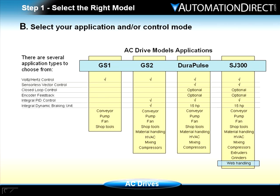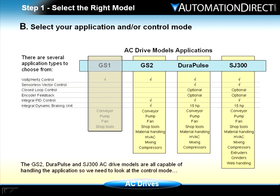Although the GS1 supports our application type, it does not meet our voltage requirements of 460 volts AC. Since the GS2, DuraPulse, and SJ300 AC drive models are all capable of handling our application, let's look at the control modes.